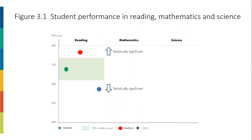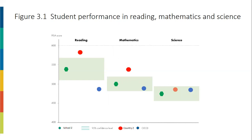Now let's take a closer look at School Z's performance in the three domains. In reading, School Z scored 540 points on the PISA scale, while Country Z scored 580 points and OST countries scored an average of 487 points. Both the red and the blue dots appear outside the green stripe, so we can conclude that Country Z scored statistically significantly better than School Z, and School Z scored statistically better than OST countries. However, on some occasions, for statistical reasons, exceptions may arise. You can always refer to the table below the figure, which states clearly if the differences are statistically significantly different or not. For School Z's performance in mathematics, the red dot is outside of the green stripe while the blue dot is inside. So this means that School Z's performance is similar to that of OST countries and is statistically lower than Country Z. In science, School Z had a similar performance to Country Z and OST countries.